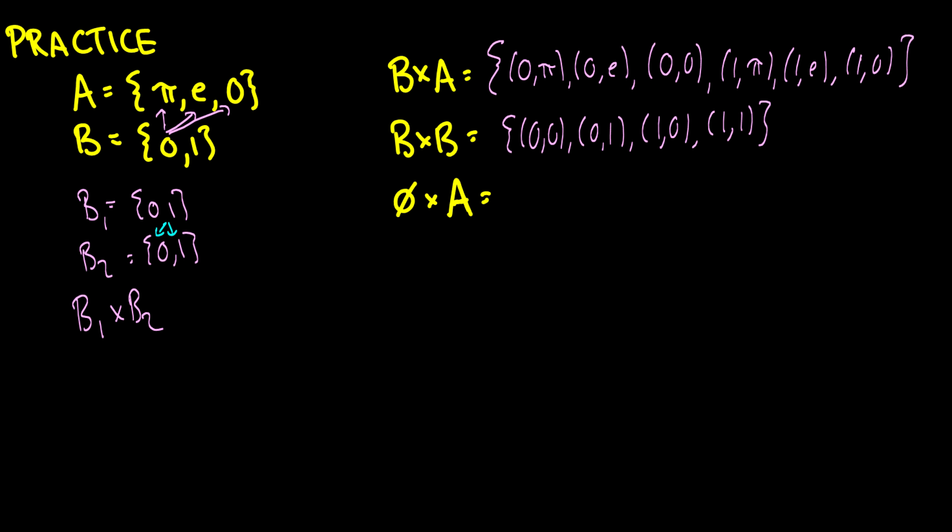Now what if we take the empty set and we cross it with another set A? Well, if you remember, the empty set is this set here. Now what does this mean? Well, when we take a Cartesian product, we take every element in the first set and we order it with another element in the second set. But there is no elements in the first set, so we can't cross it with anything else. Therefore, it's going to be the empty set. In fact, something cross the empty set is always going to be the empty set.